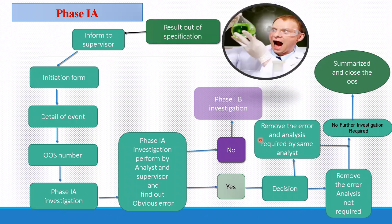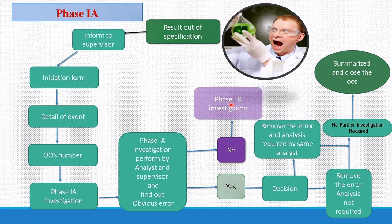If an OOS result is observed: the result is out of specification, inform the supervisor, complete the initiation form, write down details of the event on the form, and obtain an OOS number from QA. Phase 1 investigation is performed by the analyst and supervisor together to find obvious errors. If an obvious error is observed, a decision is made: either remove the error and re-analysis is required by the same analyst, or remove the error and re-analysis is not required. After that, no further investigation is required — summarize and close the OOS. If no obvious error is observed, proceed to Phase 1B.